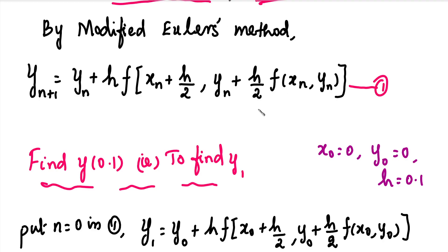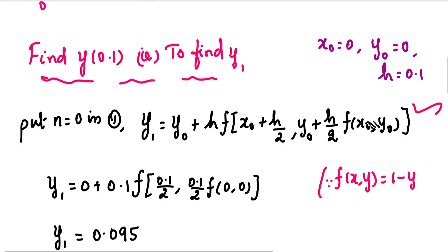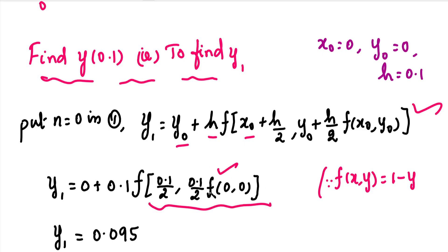We will solve this problem by substituting 0. We will reduce the formula using y0, h, and x0 — three values. Then we compute y1. On the right-hand side, we apply f(x0, 0) and also use f(x, y1) with x0, multiplying again to get the value of y1.